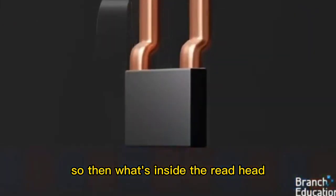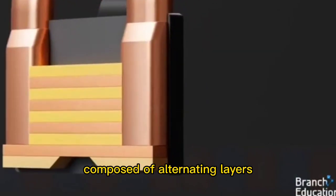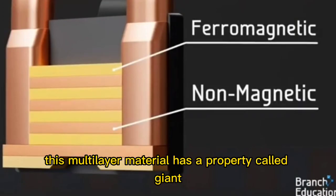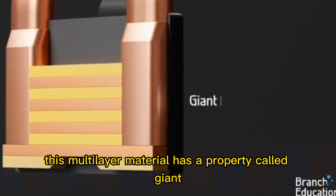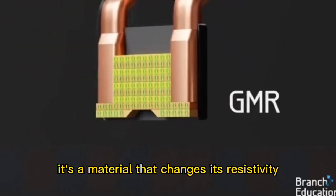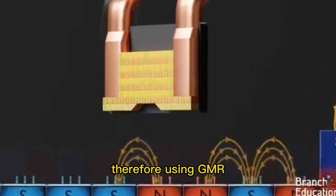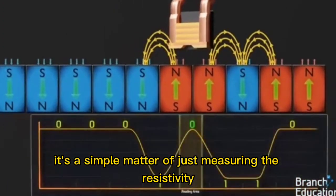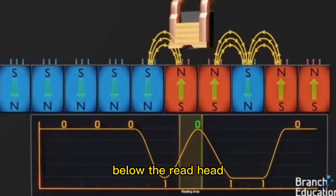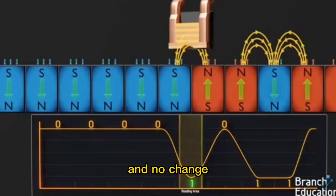So then, what's inside the read head that detects these magnetic fields? Well, inside is a multi-layer conductive material composed of alternating layers of ferromagnetic and non-magnetic materials. This multi-layer material has a property called giant magnetoresistance or GMR. And put simply, it's a material that changes its resistivity depending on the strength of magnetic fields that pass through it. Therefore, using GMR, it's a simple matter of just measuring the resistivity. And when there's a low resistivity, that means there are strong magnetic fields below the read head, resulting from a change in domain orientation, and it's a 1. There's high resistivity and no change, it's a 0.